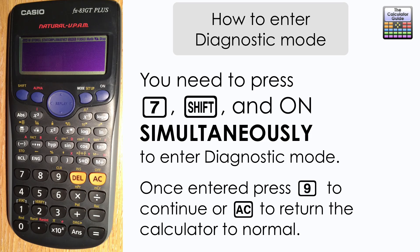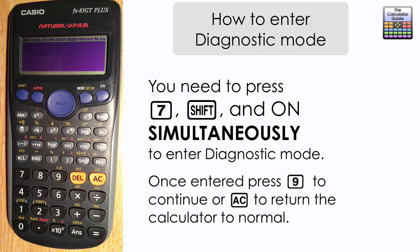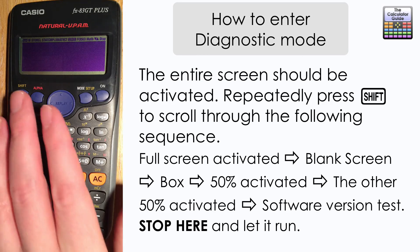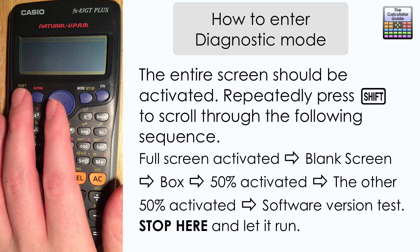Don't press AC at this point unless you want to return to normal. You actually need to press 9. Once you've done that, you should see that the entire screen has been completely activated.